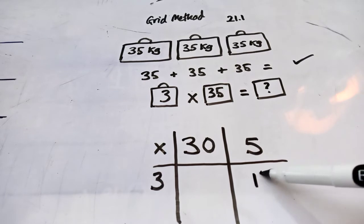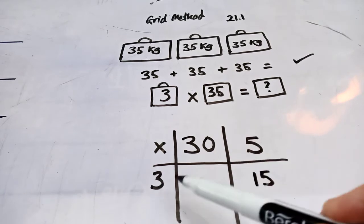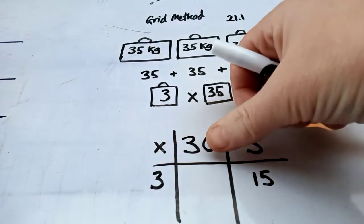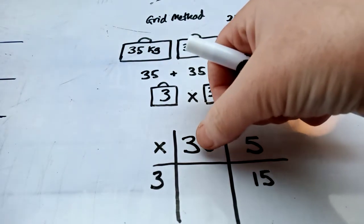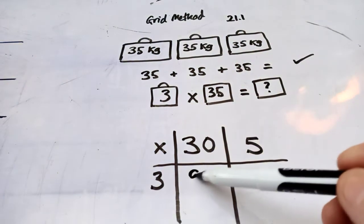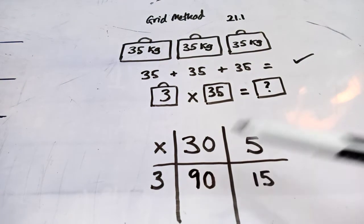3 times 5 is, yep, it's 15. And then what is 3 times 30? Well, let's pretend it's just 3. What's 3 times 3? 3 times 3 is 9. Make it 10 times bigger. So, 3 times 30 is 90.